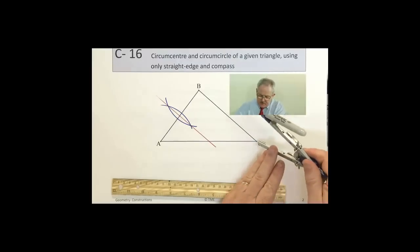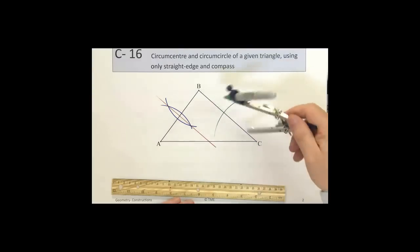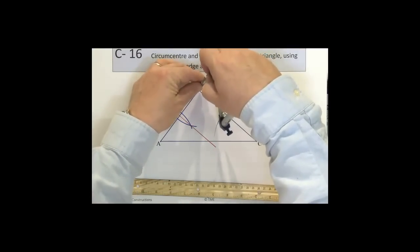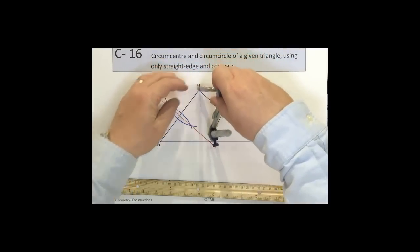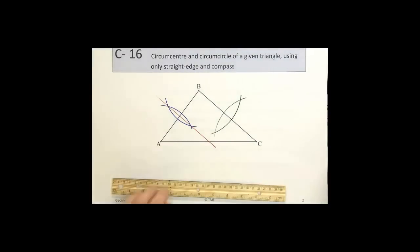So starting in C, I draw an arc. And using the same radius from B, I draw an arc. And I find it crosses again, twice.